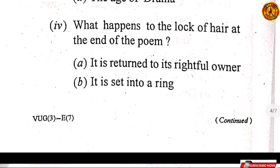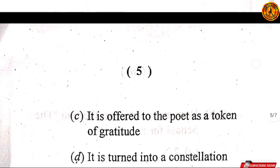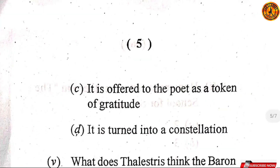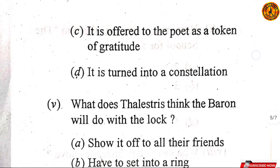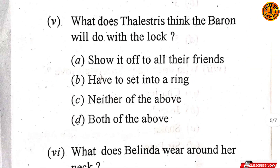Question number four: What happens to the lock of hair at the end of the poem? Iska sahih option D hai — it turned into a constellation. Question number five: What does Thalestris think the baron will do with the lock? Iska option D hoga — both of the above sahih hoga.